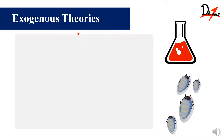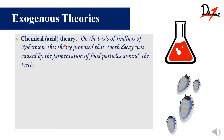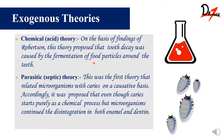Next we have the exogenous theory. In exogenous theory, we have the chemical or acid theory. According to Robertson, the food particles that we eat will undergo fermentation, and that was the reason which caused tooth decay. The next was the parasitic or septic theory, which was the first theory to relate microorganisms to caries. It said that the chemical process started dental decay, but at some point microorganisms continued to destroy the enamel and dentine.